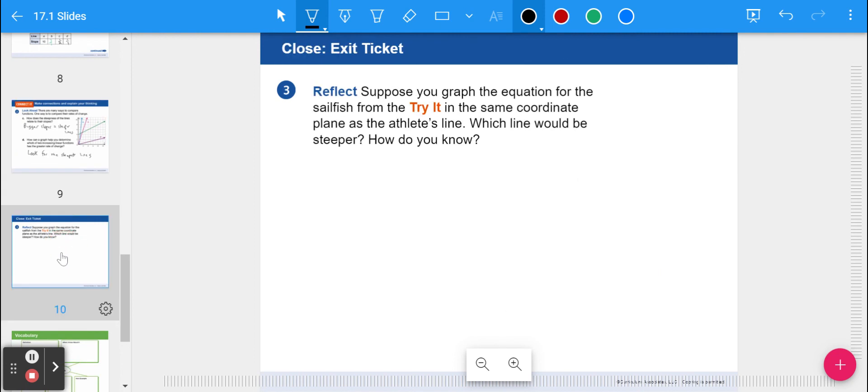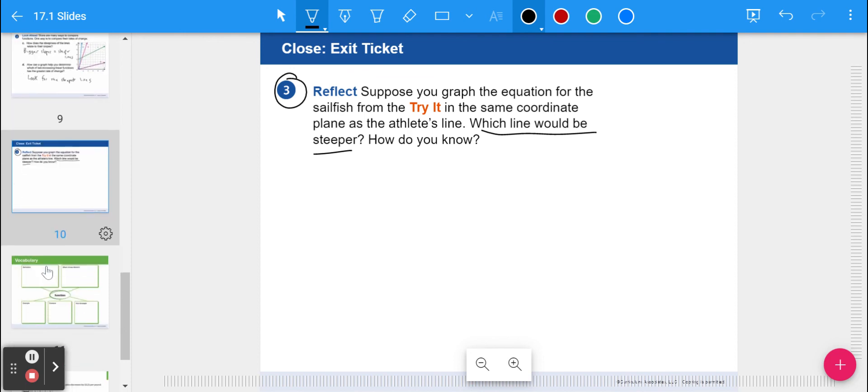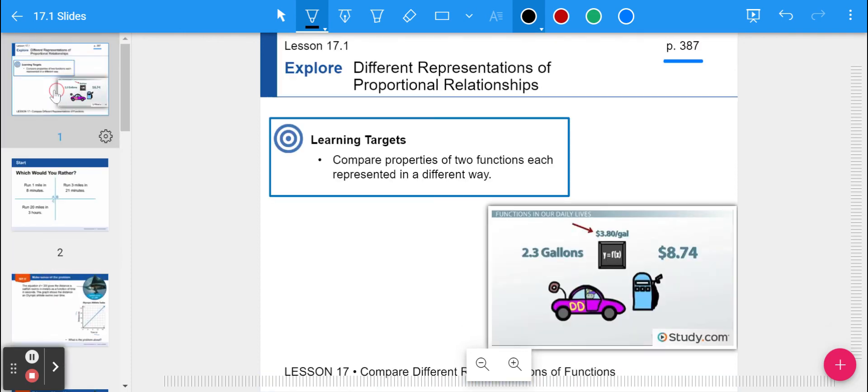So to finish up, suppose you graph the equation for a sailfish from the Try It problem in the same coordinate plane as the athlete's line. Which line would be steeper? I'd like you to answer this one on your own. Which line would be steeper? Would it be the athlete or the sailfish? Alright, that's it for lesson 17.1, where we're comparing properties of two functions, each represented in different ways, whether it's an equation, a graph, words, or maybe a table. Alright, that's it. Have a great rest of your day. We'll see you later.